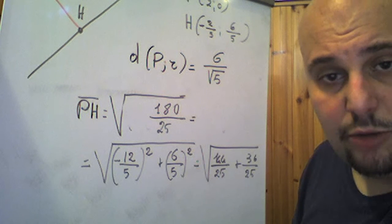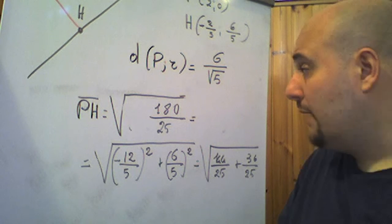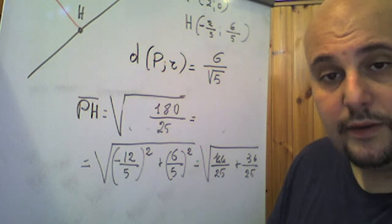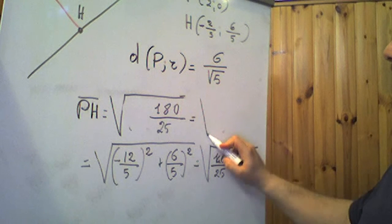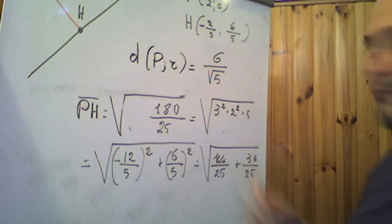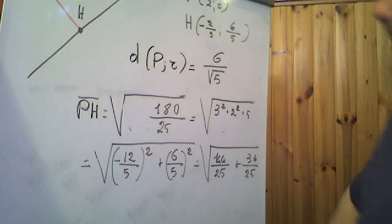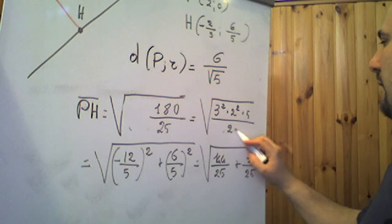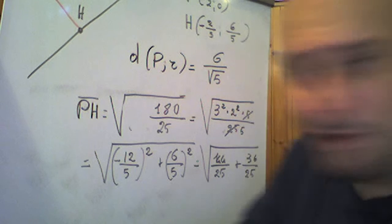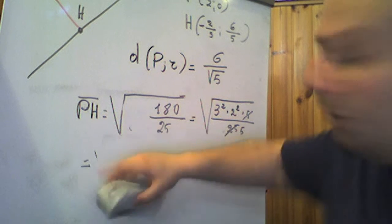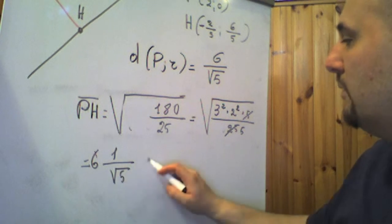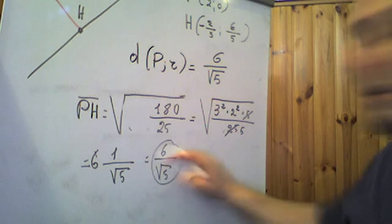Radice di 180/25. Ora, 180 = 4 · 9 · 5 = 2² · 3² · 5. Quindi radice di (2² · 3² · 5)/25. Semplificando: portiamo fuori 3² e 2², rimane dentro radice di 5; 25 = 5·5, semplificando un 5, otteniamo 3·2·(1/√5) = 6/√5. Riotteniamo di nuovo 6/√5, avete visto?